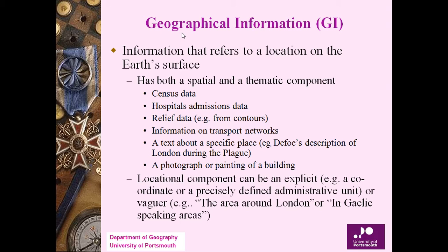What is geographical information — what is GI? It is the information that refers to a location on the earth's surface. It has both a spatial component (location-wise) and a thematic component — thematic means based on some theme, like population, census data, hospital admissions data, or relief data. A map is made on the basis of some theme, because on a single map you cannot place everything.